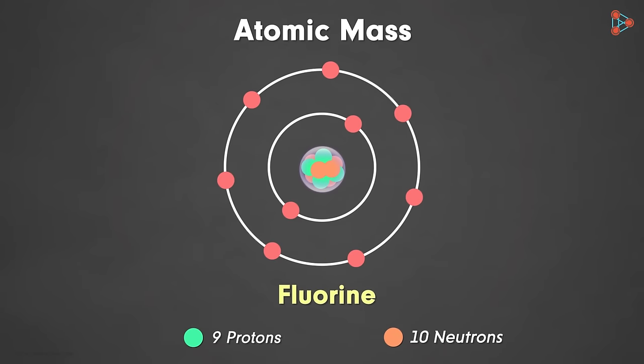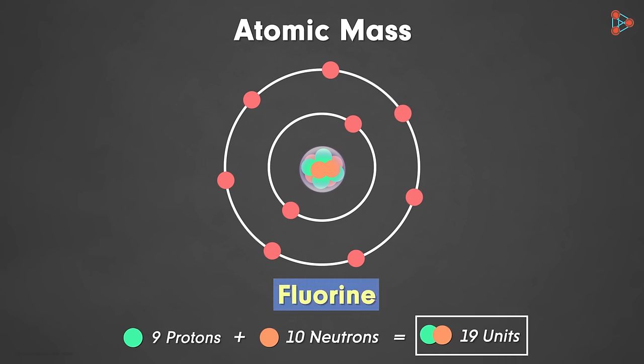So coming back to the atomic mass of fluorine, we have 9 protons and 10 neutrons. That means the total would give us 19. So can we say that the atomic mass of fluorine is 19 units? That's right!